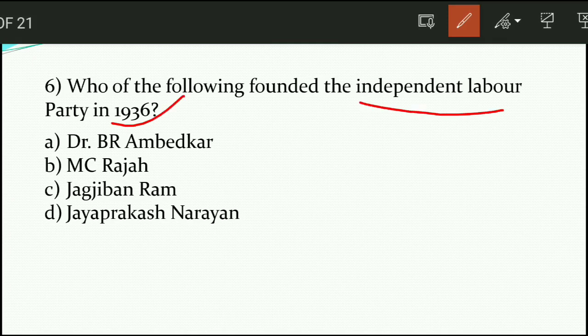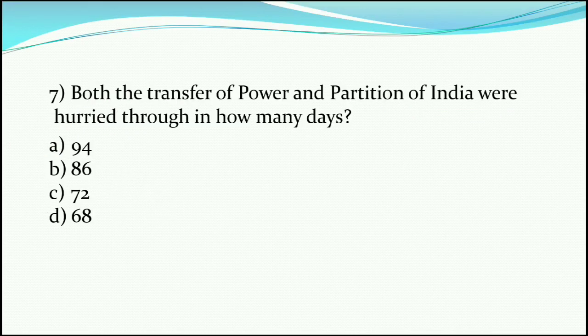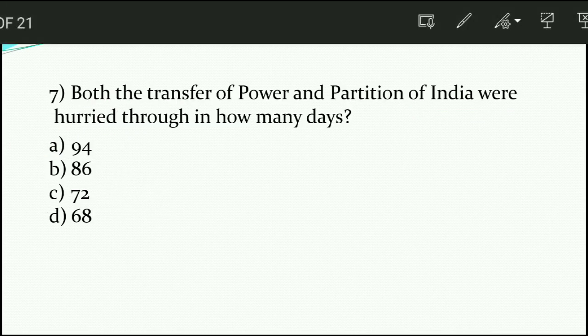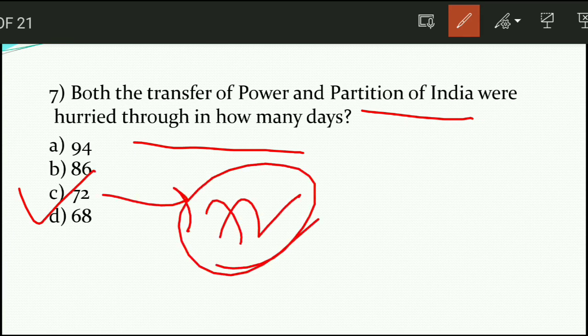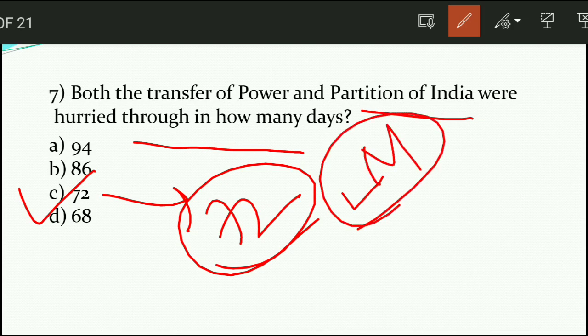Question number six: which of the following founded the Independent Labour Party in 1936? It was founded by Dr. B.R. Ambedkar — option A is the right answer. Question number seven: the transfer of powers and partition of India were hurriedly done in how many days? Option C is the right answer — 72 days. In 72 days it was hurriedly done by Lord Mountbatten, who was the last Viceroy of India, sent to carry out the partition of India.